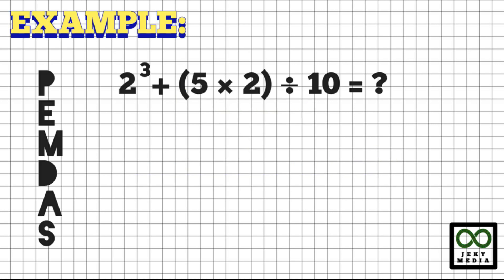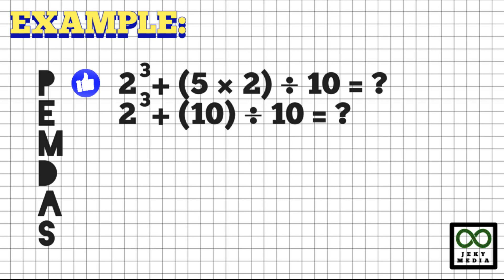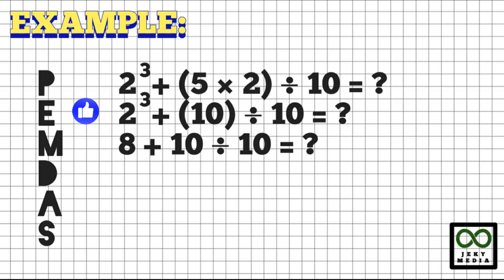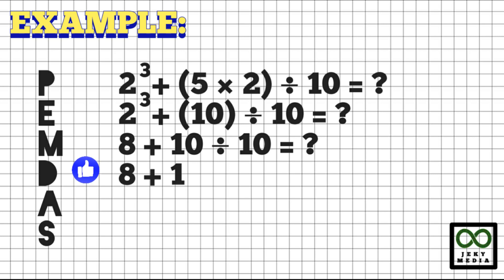Let's have more examples, a little more complex. We have 2 cubed plus the quantity inside a parenthesis, 5 times 2, divided by 10. Let's start with the parenthesis — copy 2 cubed. Operating inside the parenthesis: 5 times 2 is 10, divided by 10. Next, operate the exponent, since it comes before addition and division: 2 cubed is 8, plus 10 divided by 10. Since division comes before addition, copy 8; 10 divided by 10 is 1. Now only addition is left: 8 plus 1 equals 9.